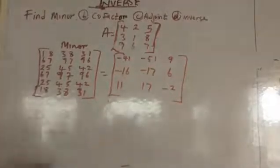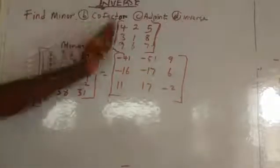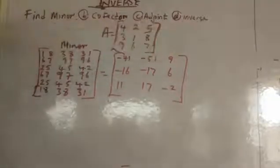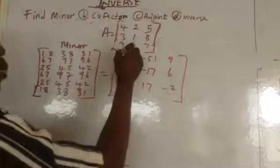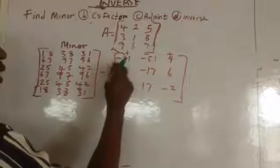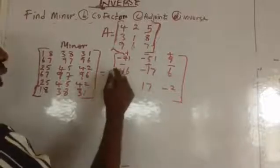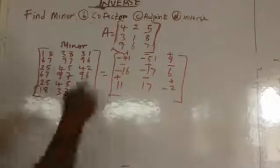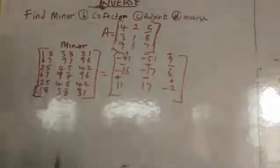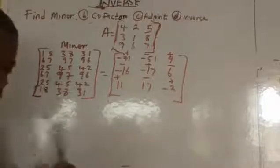Having done this, these are our minors. The next thing is to find the cofactor. Finding the cofactor is simple. In finding the cofactor, you need to understand the sign pattern: in the first row we have plus, minus, plus; the second row starts at minus, so minus, plus, minus; the third row is plus, minus, plus. You multiply these signs by the corresponding minor values — whatever you get is your cofactor.